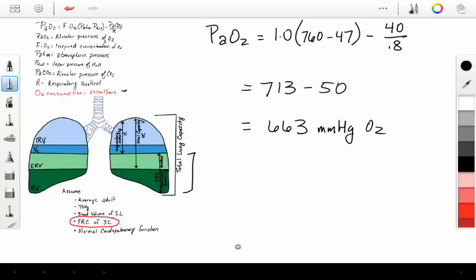Now what percent of oxygen is now in the FRC? All we have to do is take our 663, divide it by our atmospheric pressure, because that's all we can have under one atmosphere, and that is going to give us our percentage. So when we calculate that out, let's do this very quickly on my calculator. That's going to give us 87% oxygen, roughly.